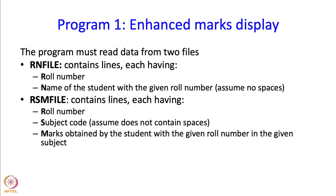You will note that I have chosen the names RN file and RSM file with some purpose. RN file is called RN file because it has two fields: roll number and name, and so the first letters of these are R and N. Similarly, roll number subject marks whose first letters are R, S and M, so that data will constitute the RSM file.